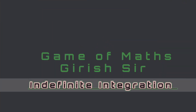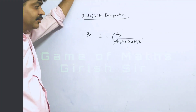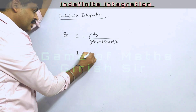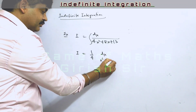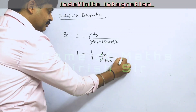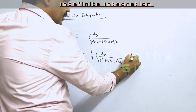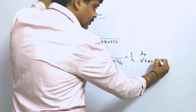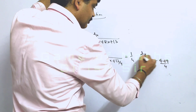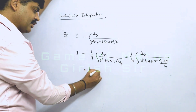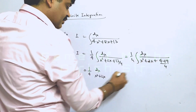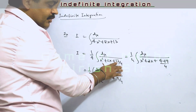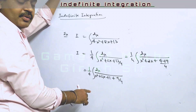Let's take another example. Here the coefficient of x squared is not 1, so we have to make it 1. We take 4 out as a common factor. In the next step, we write 13/4 as 4 + 9/4, splitting it so we can make a perfect square from the terms containing x.